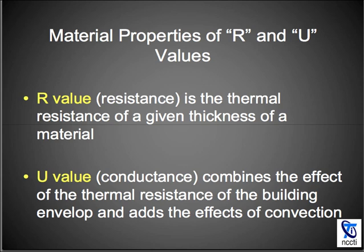The U value combines the effect of the thermal resistance of a building envelope and adds the effects of convection. The R value slows down the flow of heat, while the U value relates to how fast heat flows through a material.